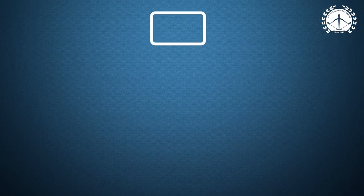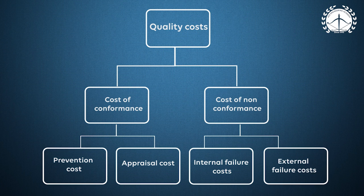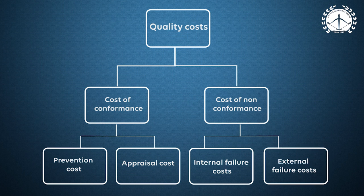Regarding cost related to quality, there are two types: conformance and non-conformance. Conformance means satisfying the norms — for that we need to test our product or service, which is internal testing, called appraisal cost. Inspection, testing, and calibration all come under appraisal cost. Costs related to improvement in the company or getting international recognition are called prevention cost. Both appraisal and prevention come under cost of conformance.